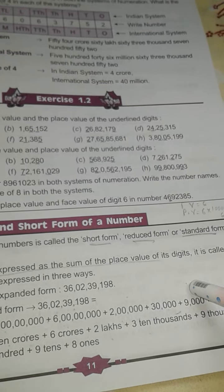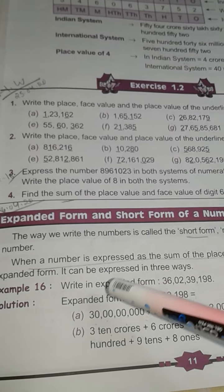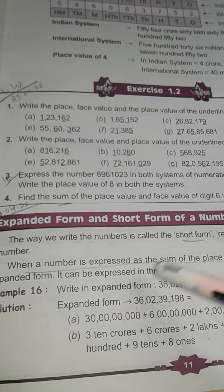When a number is expressed as the sum of the place values of its digits, it is called the expanded form. It can be expressed in three ways.